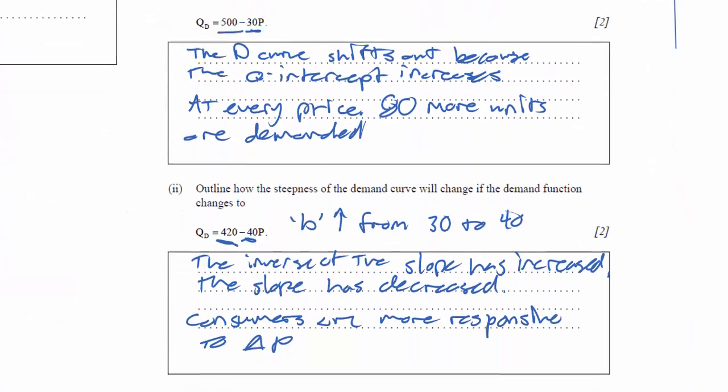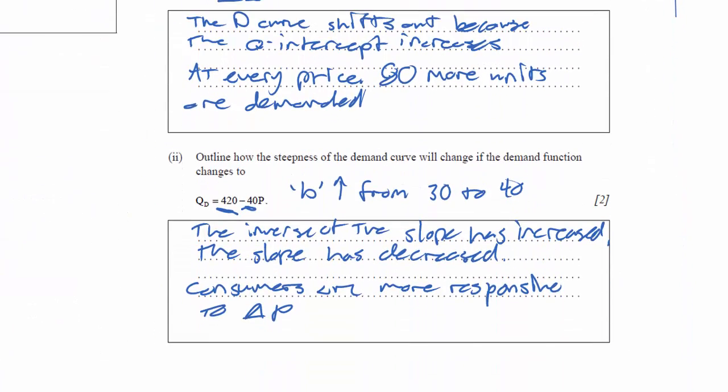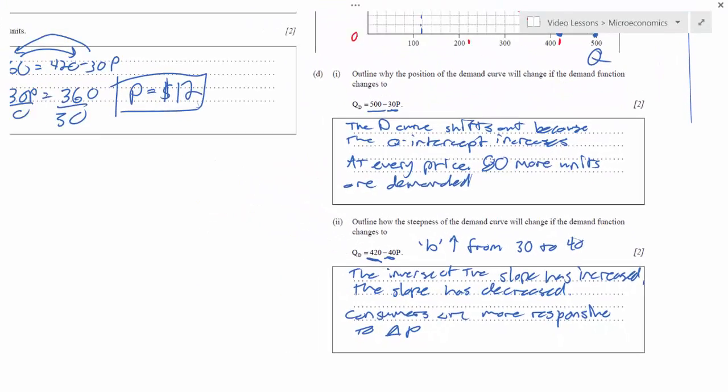So your instinct might be if the b variable increases, then the slope will increase. But you have to remember that the b variable is the inverse of the slope. So as b increases, the slope actually flattens out because consumers are becoming more responsive to price changes.